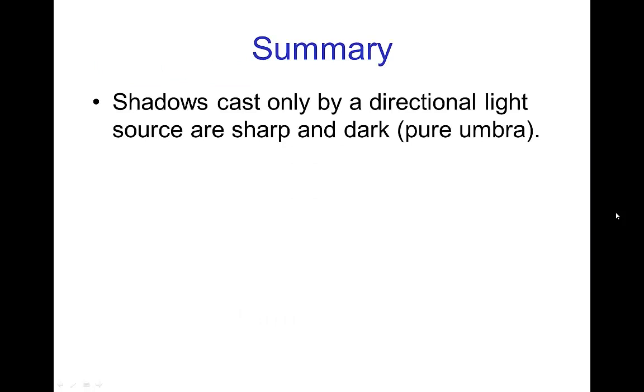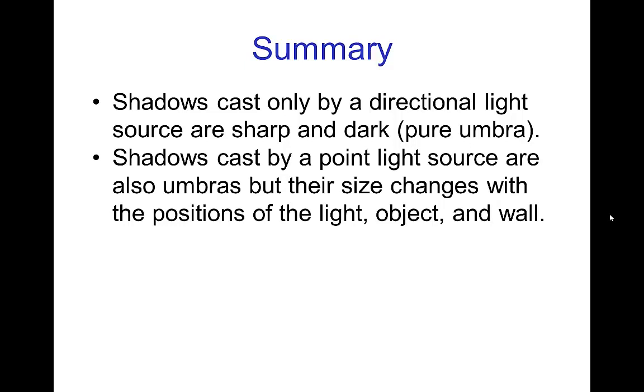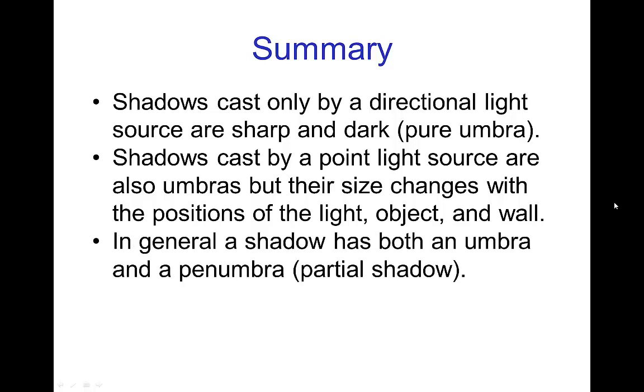So in the summary, shadows cast only by a directional light source are sharp and entirely an umbra. So those are the very simplest types of shadows. Shadows cast by a point light source are also entirely umbra, so they have no penumbra. But their size changes with the position of the light, the object, and where the shadow is being cast.